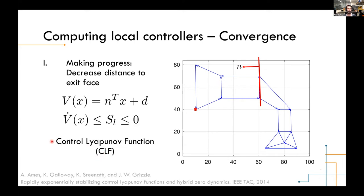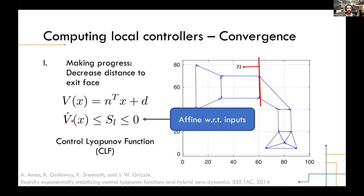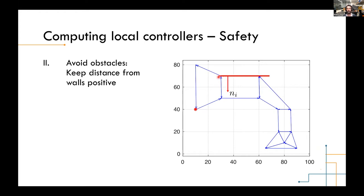Mathematically, for the convergence constraint, we represent the exit face as a plane with normal n and define a Lyapunov function V that is zero at the exit face and increases linearly with distance from it. Using V as a control Lyapunov function (CLF), we need to find a control u such that V-dot is strictly negative. If we enforce V-dot to be negative for every point in the cell, we ensure convergence toward the exit. Since V is linear and the dynamics are linear, this constraint is affine in the input.